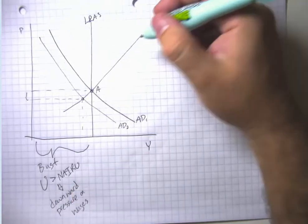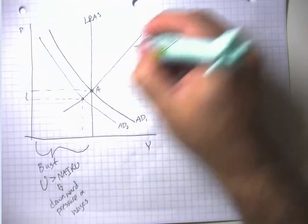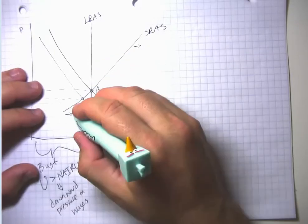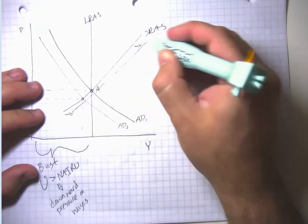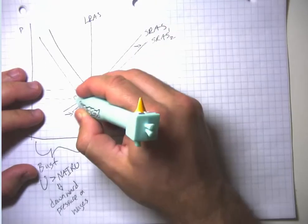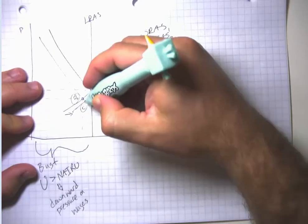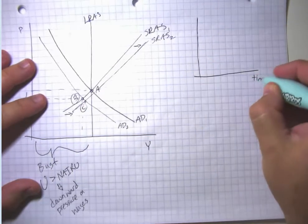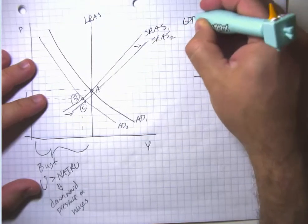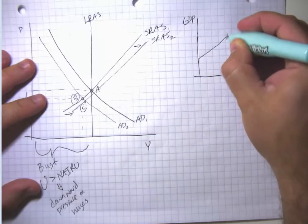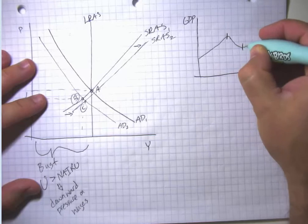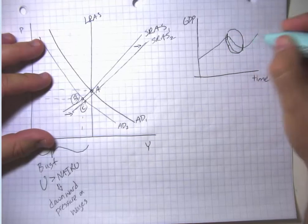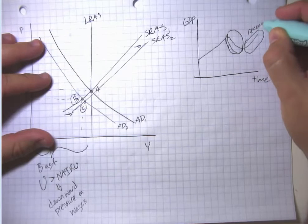As firms see that wages are lower, production becomes more profitable. So the short-run aggregate supply curve will shift out — right means more. We go from point B to something like point C, and the economy starts to recover from its recession. When we think about GDP over time, the recession is the period when the economy is actually receding — slipping backwards. Here we're in recovery, even if we're not fully recovered yet.